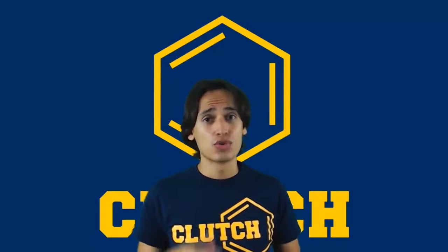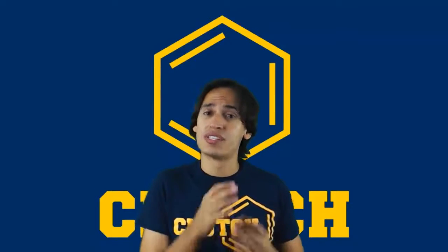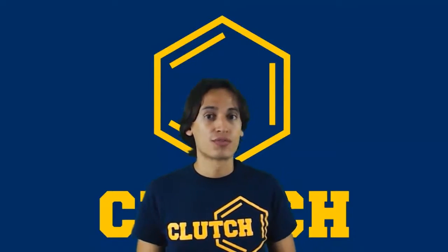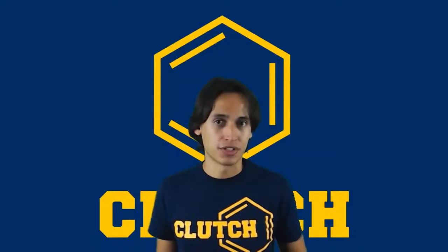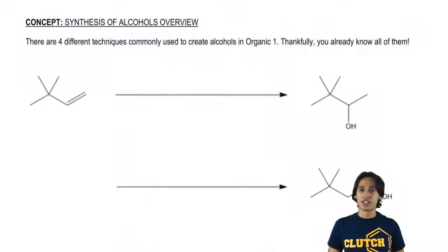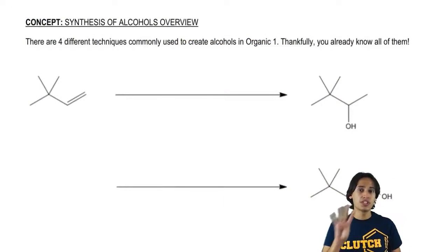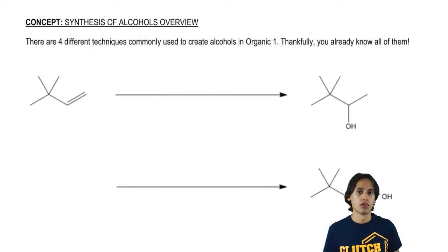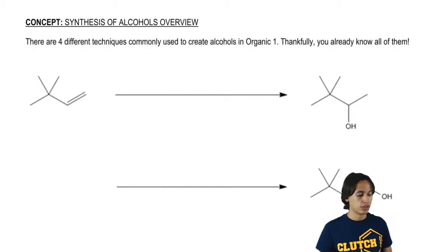In this section, we're going to talk a lot about alcohols. It's important for us to take a minute to remember all the different ways that we can make alcohols from prior chapters. Let's go ahead and get started. It turns out that there are four different ways that we've already learned to make alcohols, and I'm going to remind you of what those are now.